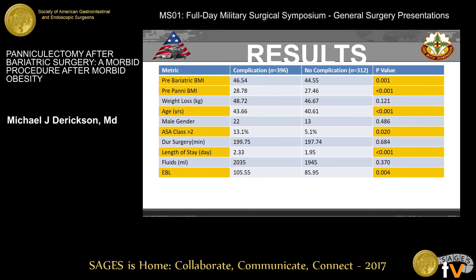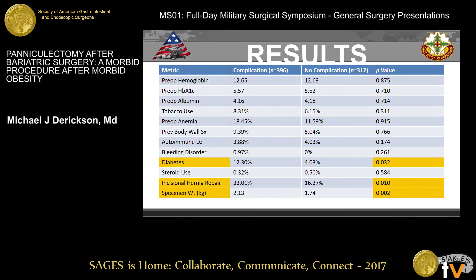On univariate analysis, we found that pre-panniculectomy BMI and pre-bariatric BMI were significantly higher in the complication group. Patients with complications were also older and had more severe comorbidities with higher ASA class greater than two percentage. Their length of stay was higher, estimated blood loss was higher, and patients with a diagnosis of diabetes were more likely to have complications.